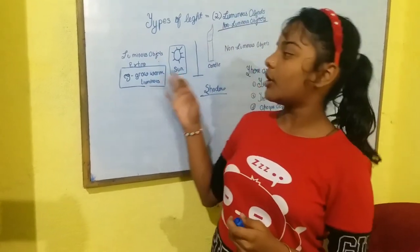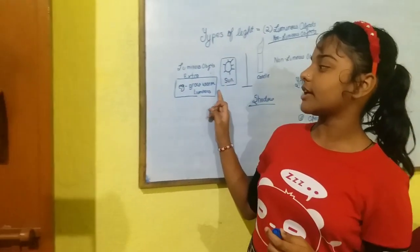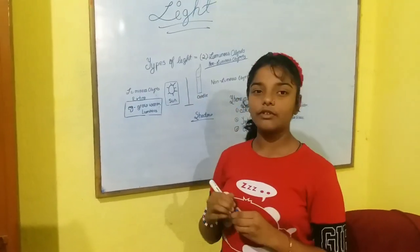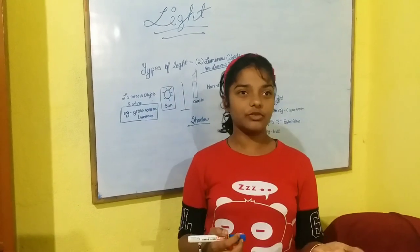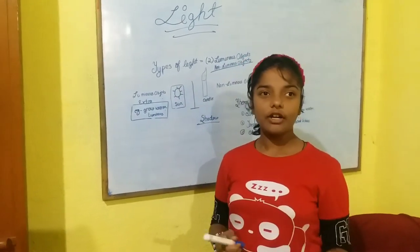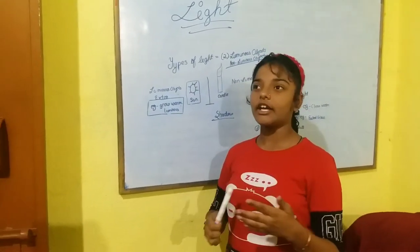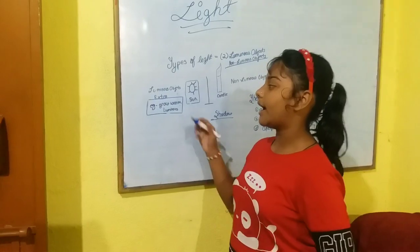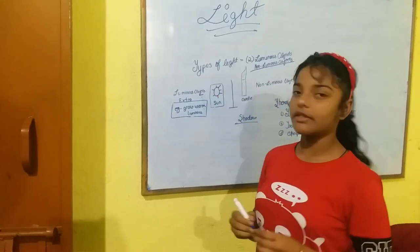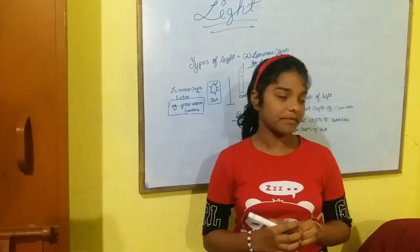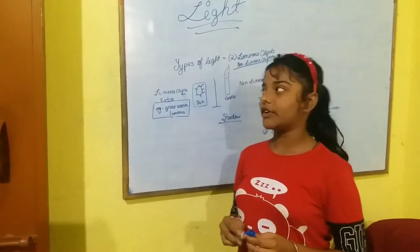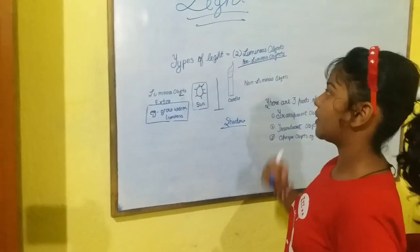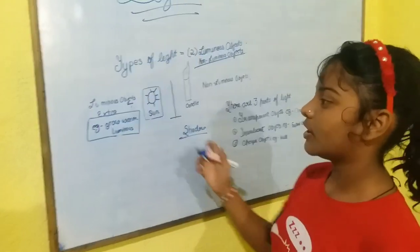Another interesting example is the firefly, which we call jugnu. As we all know, it shines all through the night. This also comes under luminous objects because it is natural. Now I would like to tell you about the difference between luminous and non-luminous objects.